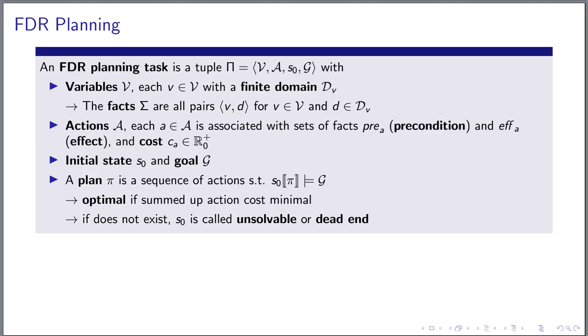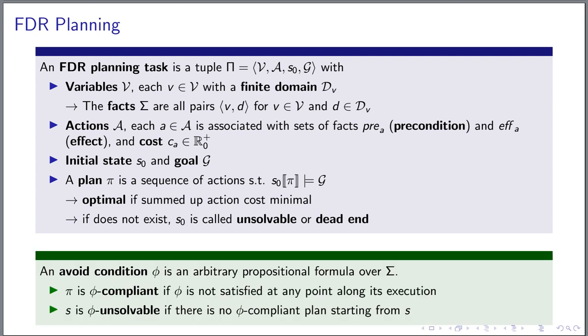As base formalism, we consider FDR planning. In this context, an avoid condition phi becomes a propositional formula over the task's facts. And we are interested in finding phi-compliant plans, so plans in which every visited state violates the avoid condition. A state for which such a plan does not exist is called phi-unsolvable.